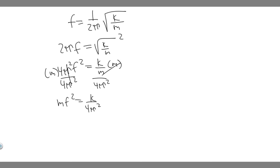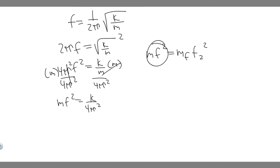Since the right side is constant, we can set the initial equal to the final. So: m times f squared equals m_final times f_final squared. We have two scenarios — the mass and frequency at the beginning equal the final mass times the final frequency squared.